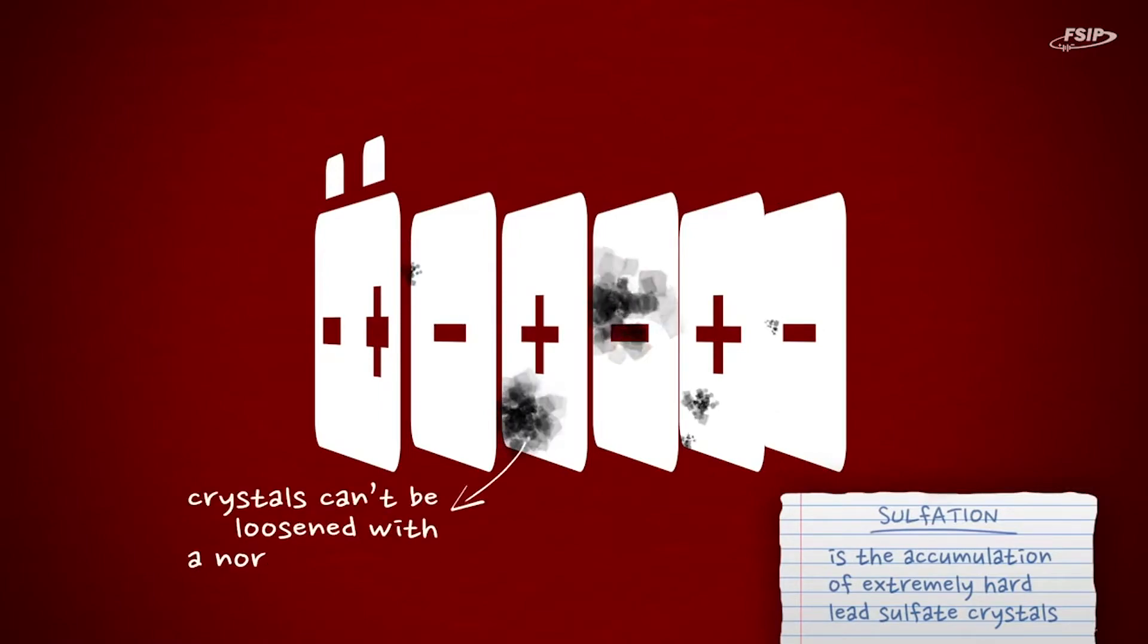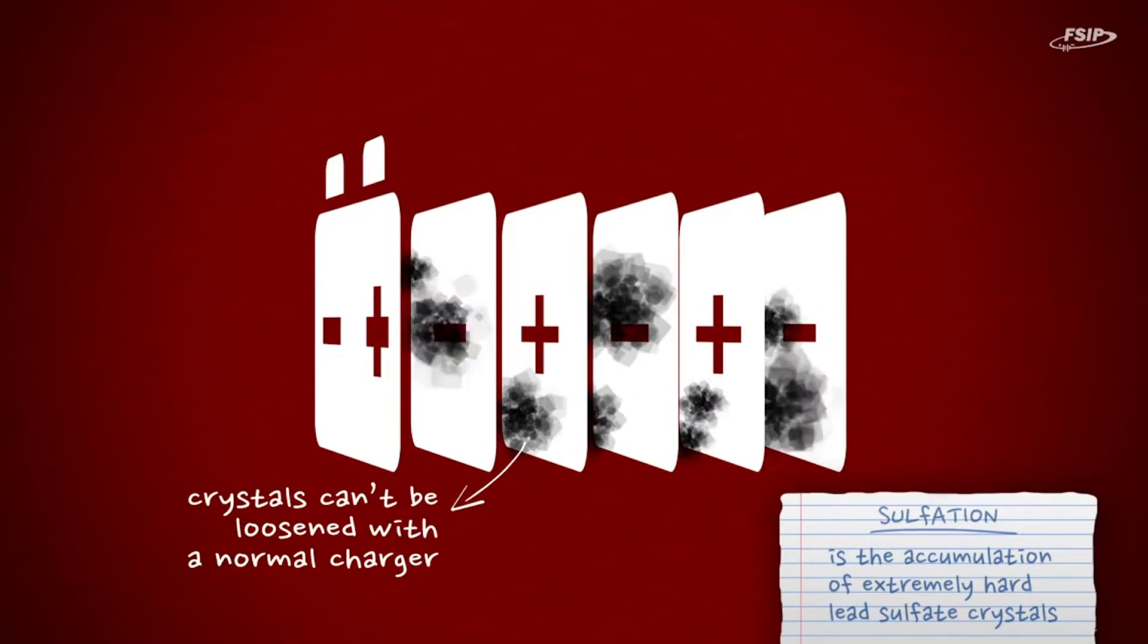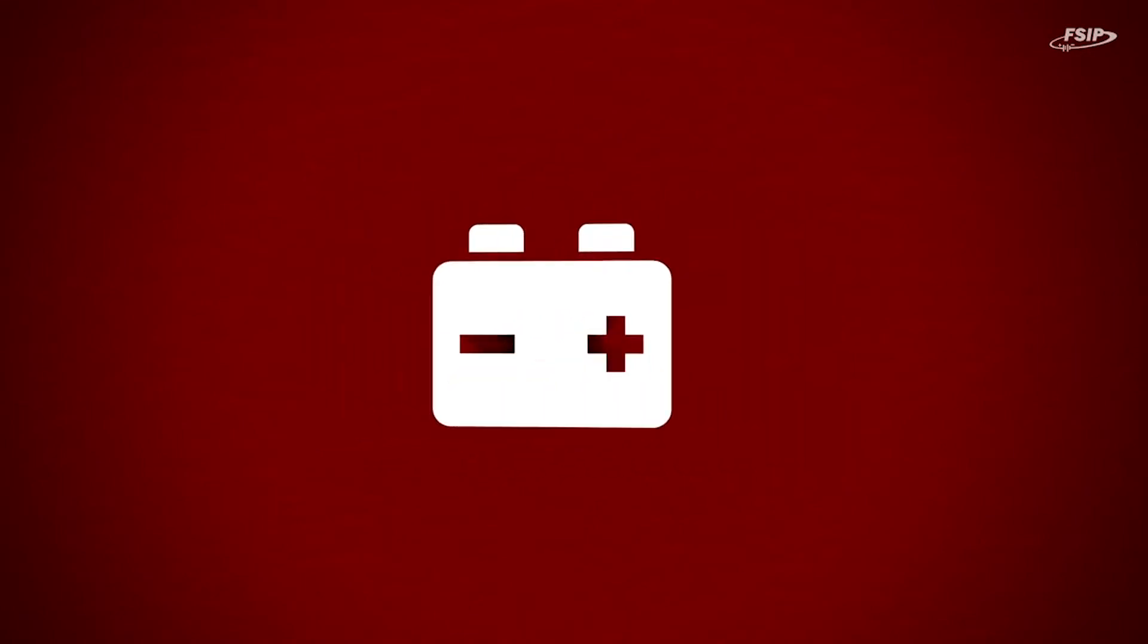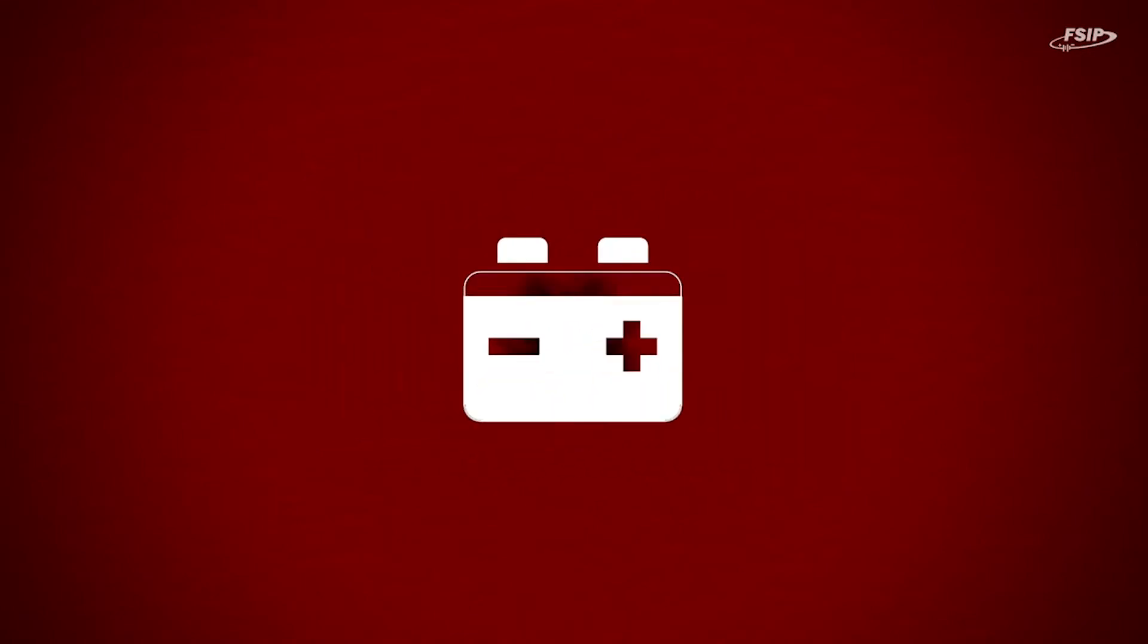Sulfate crystals cannot be loosened with a normal charger, and this will eventually cause the lead plates to become partially unusable, which results in capacity loss. You will have to charge the battery more frequently, and its lifespan will decrease.